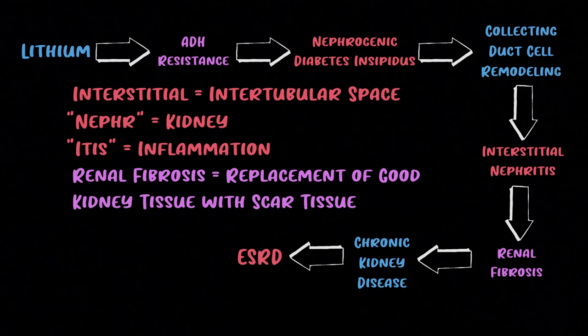I've oversimplified things somewhat — there are other effects I didn't mention, but they're rarer and secondary. For completeness: lithium can cause renal tubular acidosis, because tubular defects prevent the nephron from maximally acidifying the urine. There's also nephrotic syndrome — mostly from case reports — very rarely associated with minimal change disease, and it's not entirely clear if lithium is the direct cause.